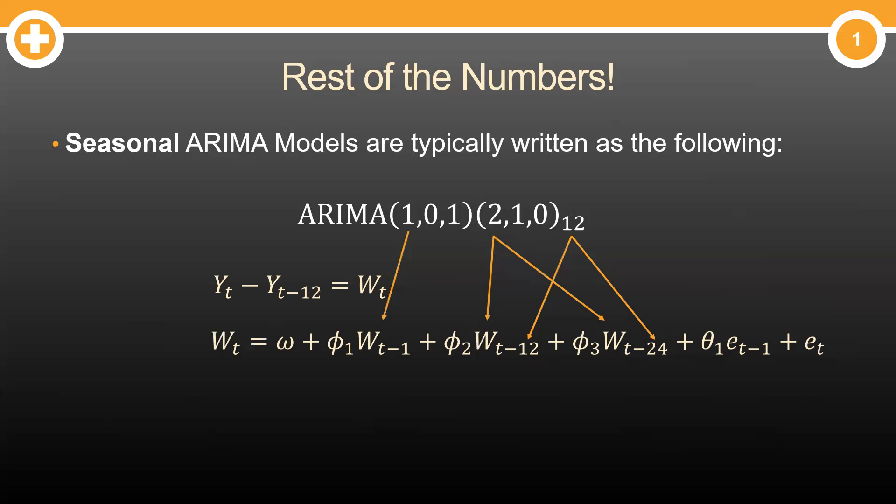Whenever you see these seasonal pieces, big P or big Q, you're just putting lags at every season. We have a big P of 2. So we have lags for two seasons. Again, T minus 12 and T minus 24. If you had a big P of 3, it would be lags at 12, 24, 36. You get the idea.